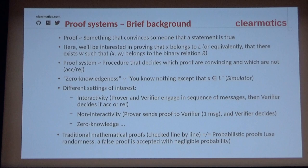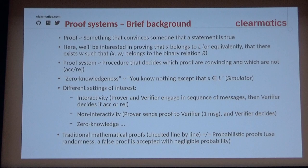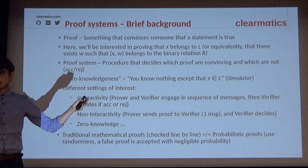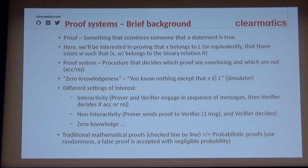Let's briefly recap what a proof system is. A proof is just something that convinces someone that a statement is true. If I want proof that you have a phone, just show me your phone — now I'm convinced. But then I can also see you have an iPhone and learn more information. So we're interested in zero-knowledge proofs. In the literature, you want to prove that X, some instance, belongs to a language — equivalently, that there exists a witness W such that X and W satisfy some binary relationship.